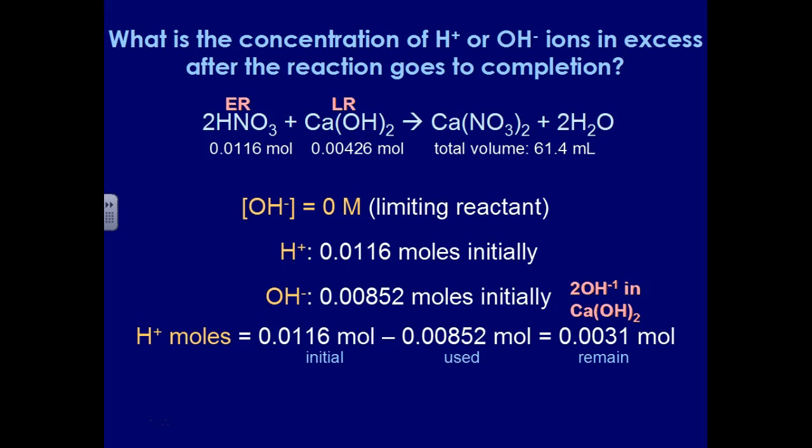To get the concentration, I can now take those moles of H+, divide it by the volume in liters. And when I do that, I see that it's not present in substantial quantities, but I have a slight concentration of H+ ions in excess, 0.050 molar. And that should be enough to get you through the acid-base neutralization problems for that solution stoichiometry worksheet.